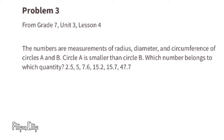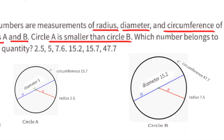Problem number 3 from 7th grade, Unit 3, Lesson 4. The numbers are measurements of radius, diameter and circumference of circles A and B. Circle A is smaller than circle B. Which number belongs to which quantity? Circle A is smaller. We have a 2.5 and a 5. The 5 could be the diameter of the smaller circle, and 2.5 could be the radius of the smaller circle, since the radius is half the diameter. To find the circumference, we need to multiply 2 times pi times the radius, and 2 times pi times 2.5 equals 15.7. So 15.7 could be the circumference for circle A.